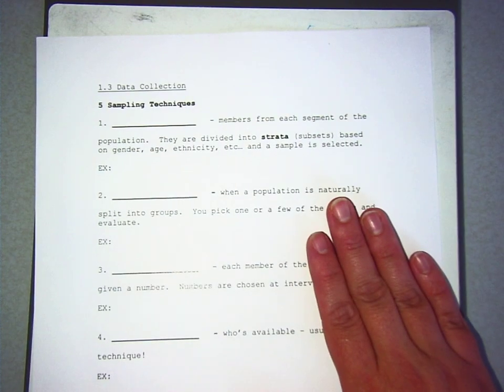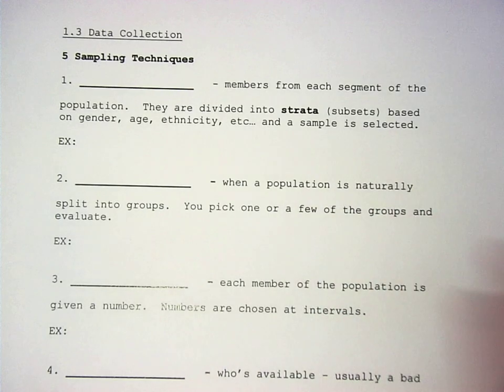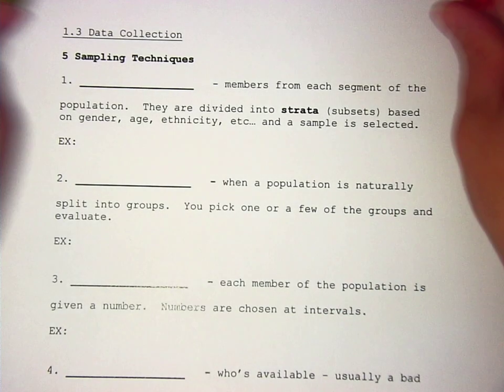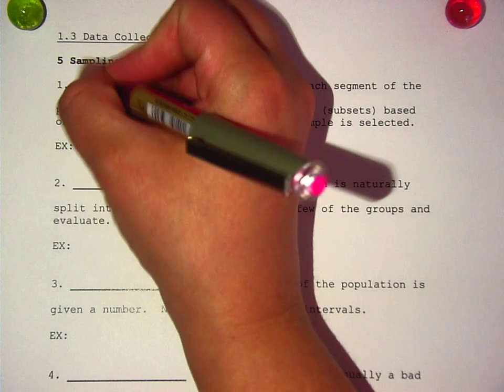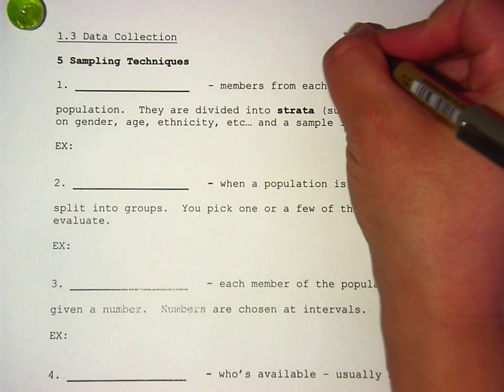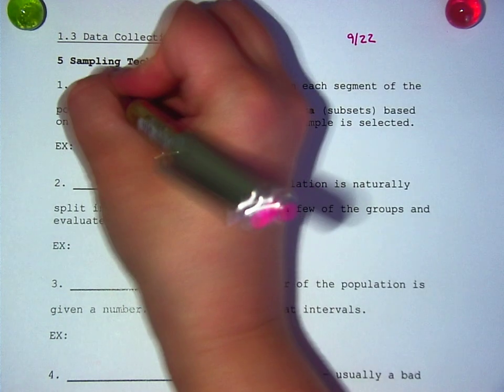There are five sampling techniques. The first sampling technique is called, you might want to put today's date on this, 9-22. The first sampling technique is called stratified.